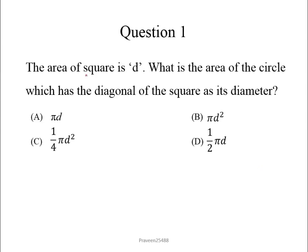Here is question number 1. The area of square is d. What is the area of the circle which has the diagonal of the square as its diameter?